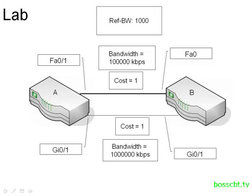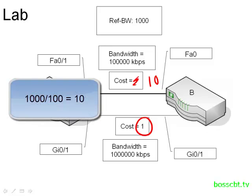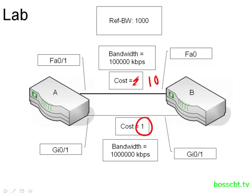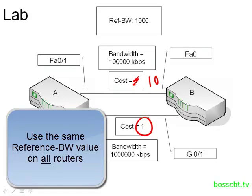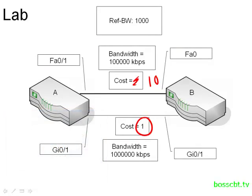To fix this, we'll change the reference bandwidth to 1,000. That way, the Fast Ethernet cost will change to 10, and the gigabit Ethernet will remain at 1. OSPF can then take advantage of the higher bandwidth of the gigabit interface and prefer it over Fast Ethernet. It's a best practice to change this in order to get the most out of different speed links, and also a best practice to have all routers on the network use the same reference bandwidth — so change it on all of them, not just one. That way they all see the nuances between Fast Ethernet, gigabit, and 10-gigabit interfaces.